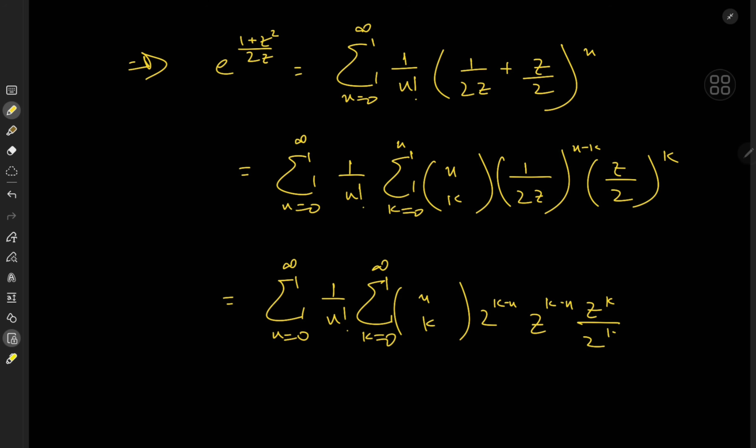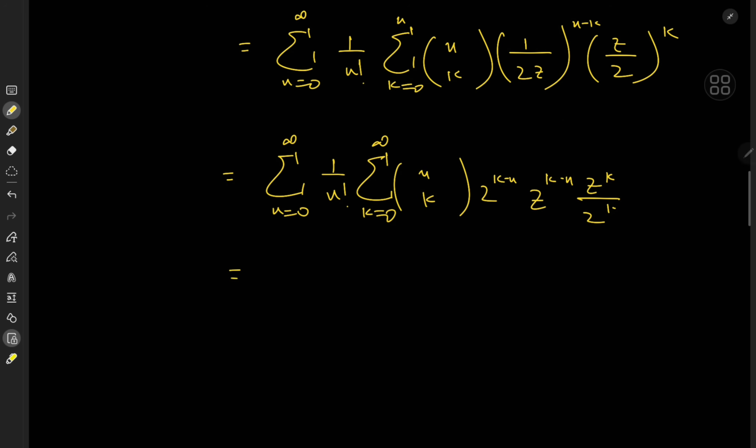Okay, cool. It looks like we can do some simplification now. So we have the sum over n from 0 to infinity, 1/n!, sum over k from 0 to n, n choose k. 2^(k-n-k) just means we're left with 2^(-n). And z^(k-n-k) means we just have... wait a second. It's k - n + k, of course. It's 2k - n. Almost messed up there really bad.